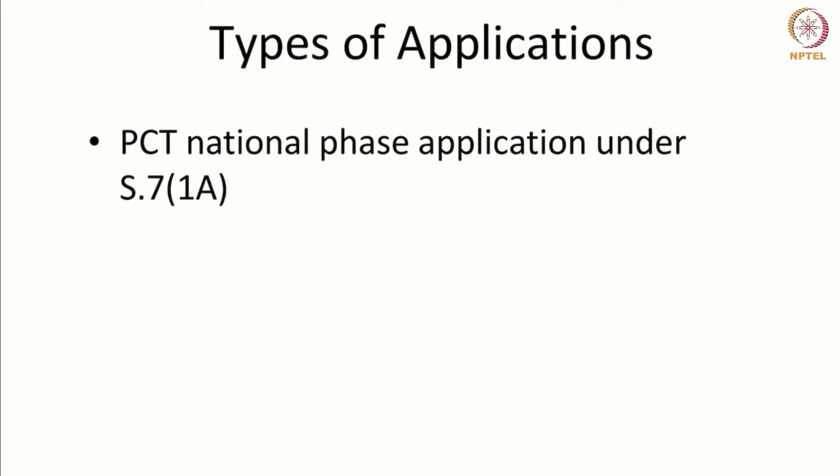The PCT national phase is filed when you want to enter India through the PCT route. Assume that you had filed an application in the United States and within 12 months you file a PCT application choosing the United States Patent Office as the PCT office. Your international application under the PCT begins in the United States, and within the time period allowed you can enter India using the PCT international application, citing the priority in the United States. This follow-up in India through the PCT route is called a PCT national phase application.